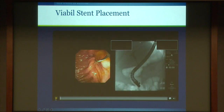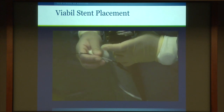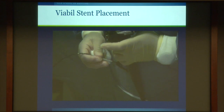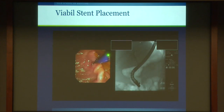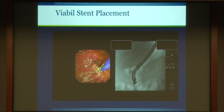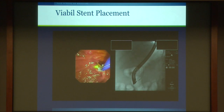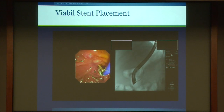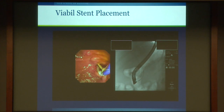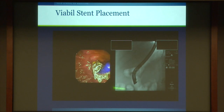Here is placement of a self-expanding metal stent. A very narrow catheter — about 7 French or 2 millimeters in diameter — is inserted through the endoscope channel. A guide wire is advanced into the bile duct, and the delivery catheter containing the stent is placed over the guide wire and positioned in the bile duct. To deploy this stent, a long string is pulled and the stent is unconstrained, popping open to create a nice wide opening.